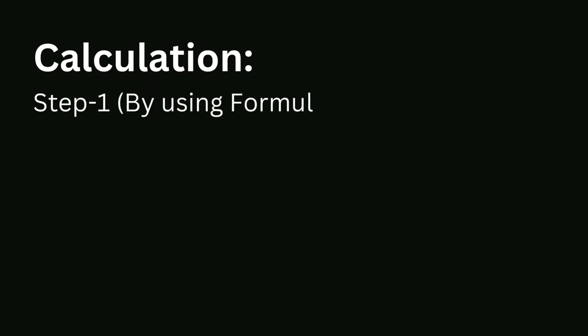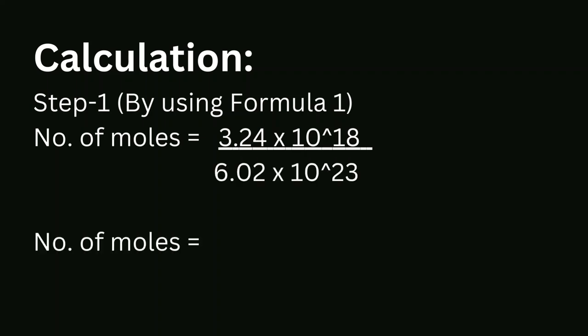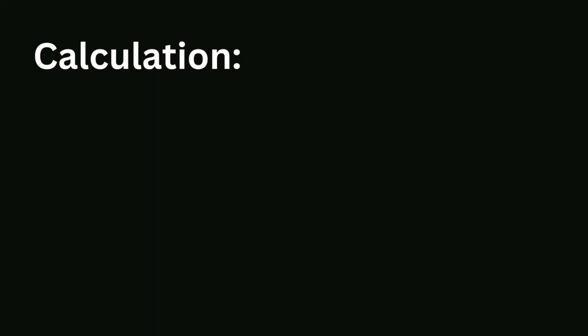Calculation step 1: solve using the second formula. In this step we calculate the number of moles of iron atoms present in 3.24 × 10¹⁸ atoms of iron. Number of moles = 3.24 × 10¹⁸ divided by 6.02 × 10²³ = 0.538 × 10⁻⁵ moles.